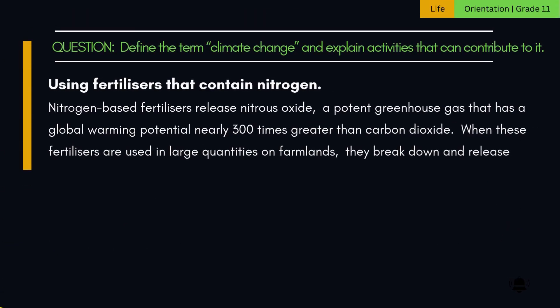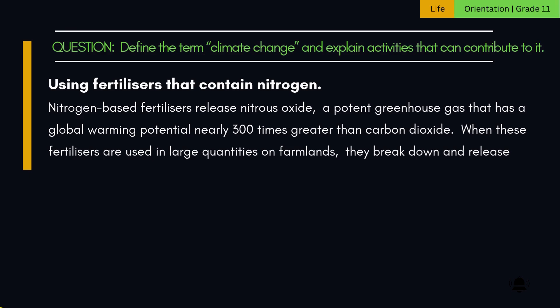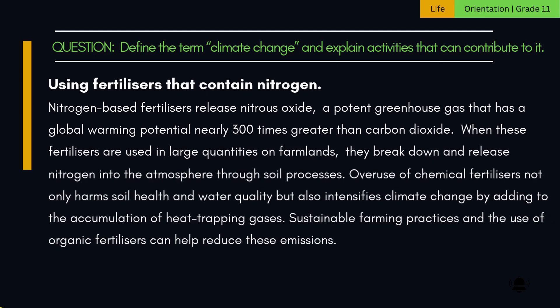4. Using fertilizers that contain nitrogen. Nitrogen-based fertilizers release nitrous oxide, a potent greenhouse gas that has a global warming potential nearly 300 times greater than carbon dioxide. When these fertilizers are used in large quantities on farmlands, they break down and release nitrogen into the atmosphere through soil processes. Overuse of chemical fertilizers not only harms soil health and water quality, but also intensifies climate change by adding to the accumulation of heat-trapping gases. Sustainable farming practices and the use of organic fertilizers can help reduce these emissions.